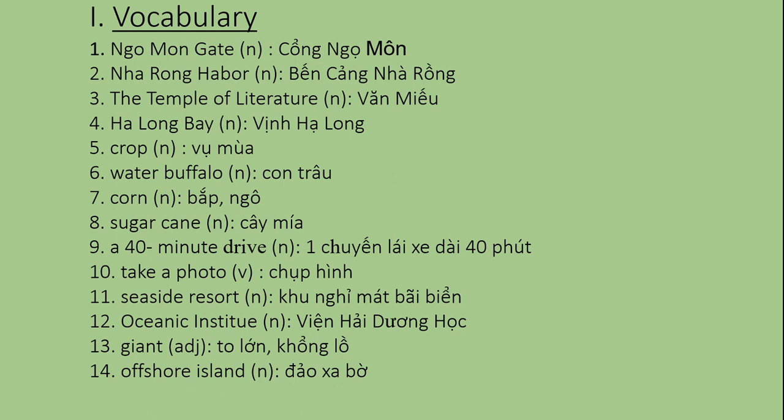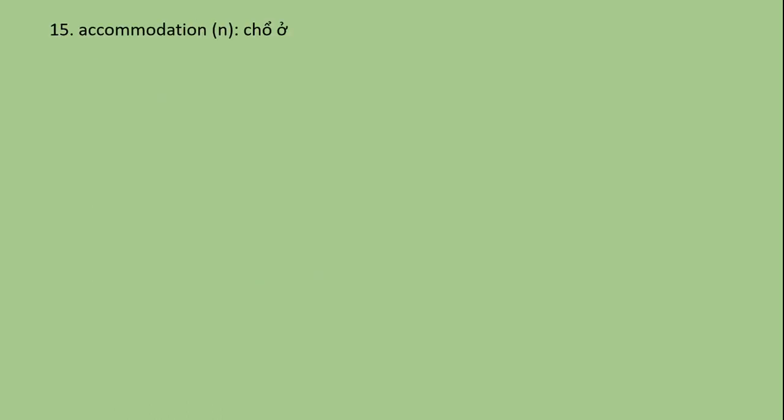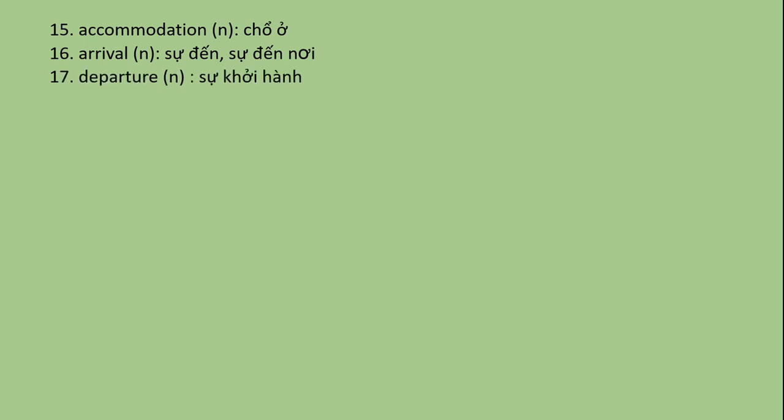Offshore Island - Đảo xa bờ. Accommodation - một danh từ, có nghĩa là chỗ ở. Arrival - các bạn thấy nó là một noun; arrive là động từ có nghĩa là đến. Như vậy, arrival sẽ là sự đến, hoặc là sự đến nơi. Departure - động từ là depart, có nghĩa là khởi hành. Như vậy, departure sẽ là sự khởi hành.